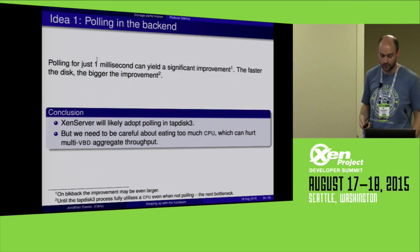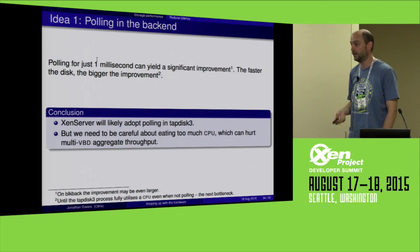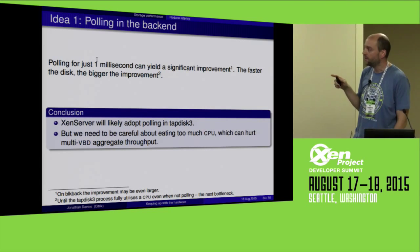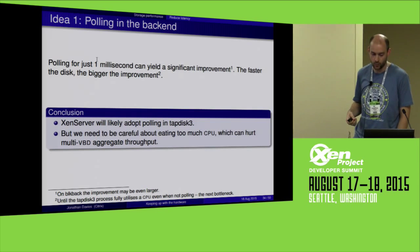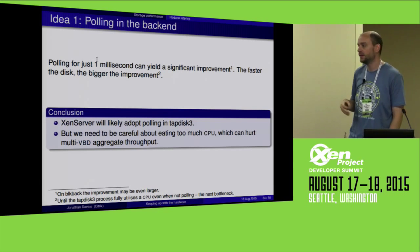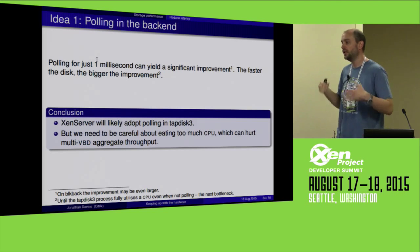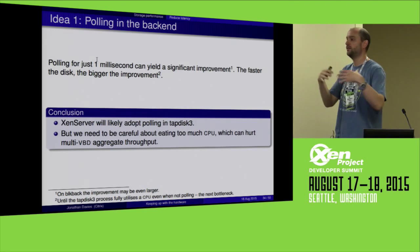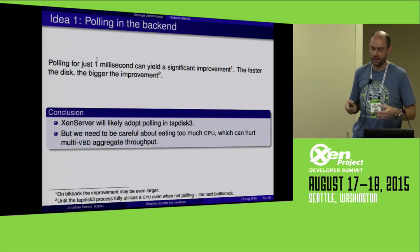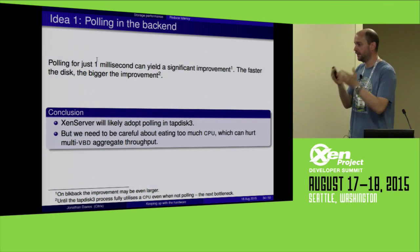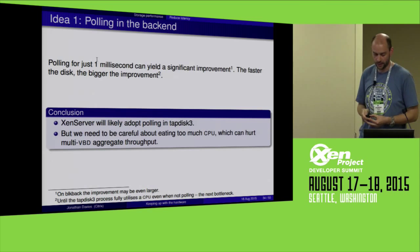XenServer is likely to adopt polling in tapvis3 because it looks good. However, we need to be careful about eating too much CPU in DOM0 — polling is going to be CPU-intensive. The approach we're taking is to only poll if there's sufficient CPU capacity in DOM0, and if there is, go ahead and spin looking at the ring.